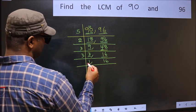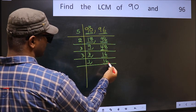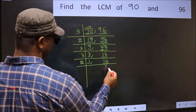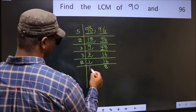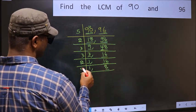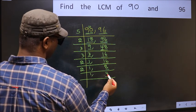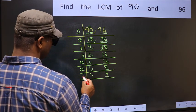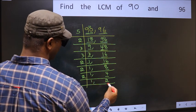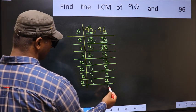Now we got 1 here, so focus on the next number 16. 16 is 2 eights, so 16. Now we have 8; 8 is 2 fours, so 8. Now we have 4; 4 is 2 twos, so 4. Now we have 2; 2 is a prime number, so 2 once is 2.